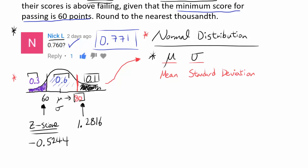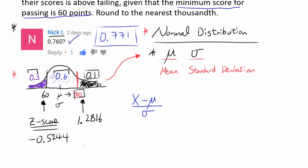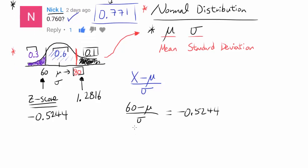The Z-score formula is: Z = (value − μ) / σ, telling us how many standard deviations away from the mean a value is. So we get two equations: (60 − μ) / σ = −0.5244 and (80 − μ) / σ = 1.2816. Multiplying both equations by σ and rearranging gives us: 60 = μ − 0.5244σ and 80 = μ + 1.2816σ.